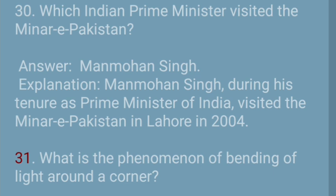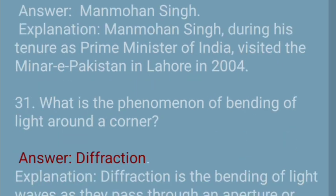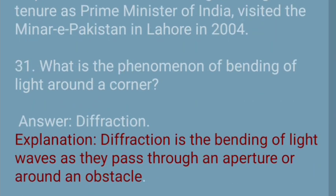Question 31: What is the phenomenon of bending of light around a corner? Answer: Diffraction. Explanation: Diffraction is the bending of light waves as they pass through an aperture or around an obstacle.